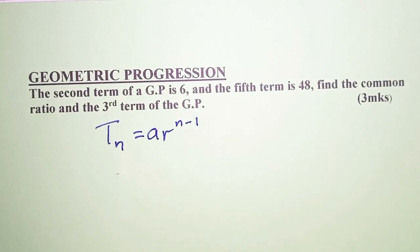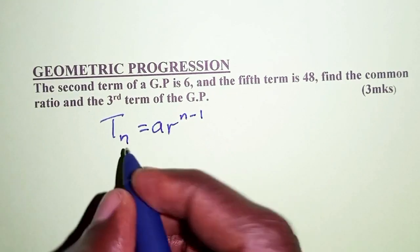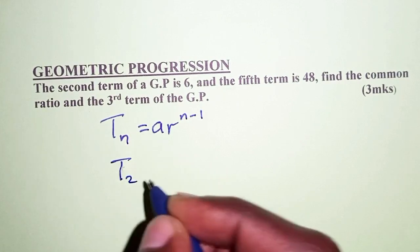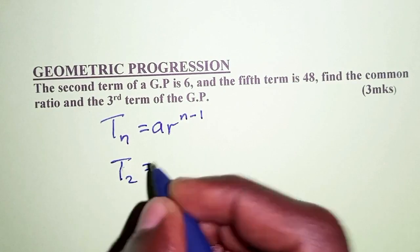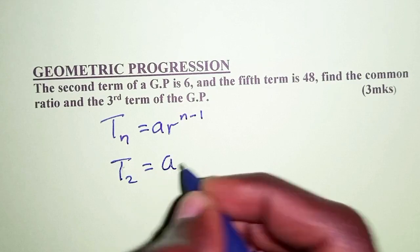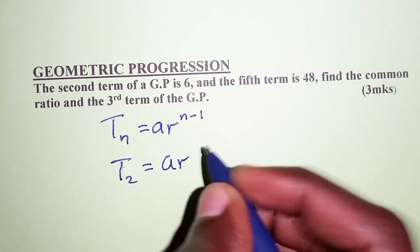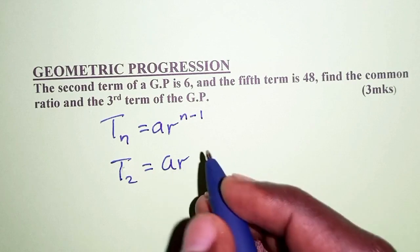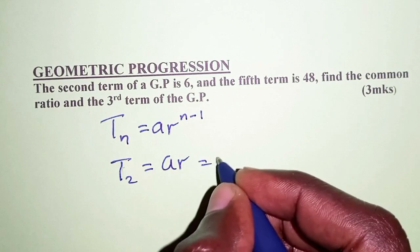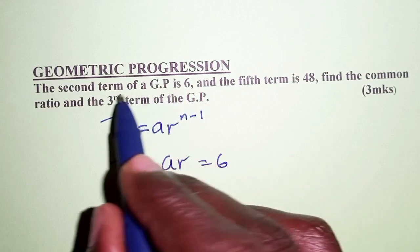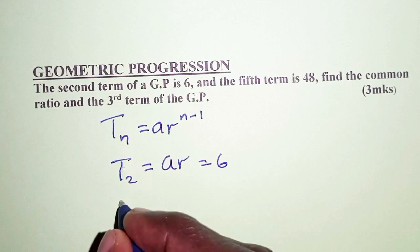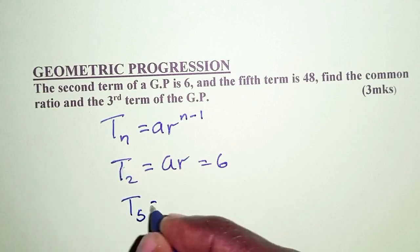So here we are told that the second term, so for the second term n is 2. The second term is a times r raised to 2 minus 1, which is just once, so we have ar, and that we're told is 6 for this statement here. And the fifth term is 48.